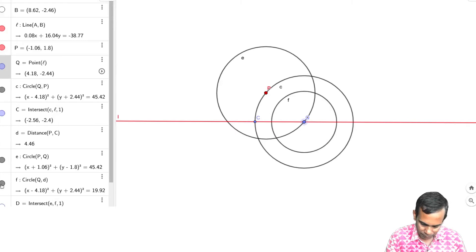So what I'll do is, I will draw a circle F with center at Q and radius equal to D. D is the distance between P and capital C. And then, I take capital D to be the intersection of the circle E with the circle F.